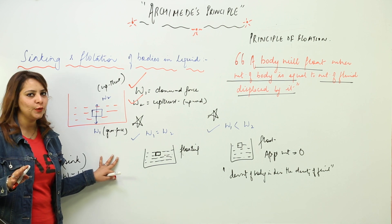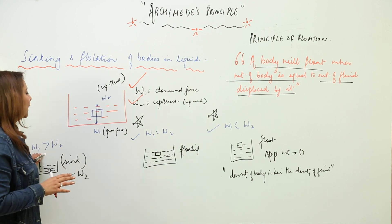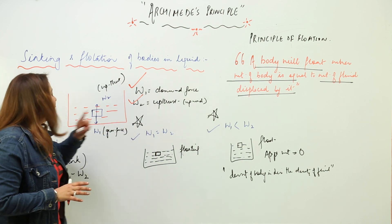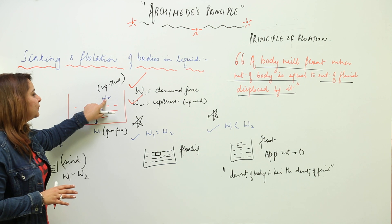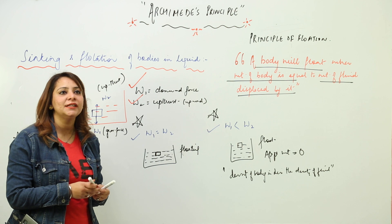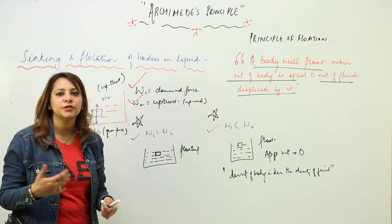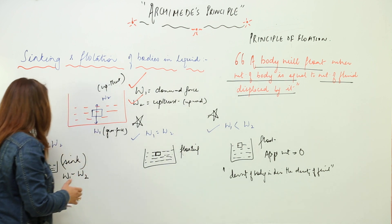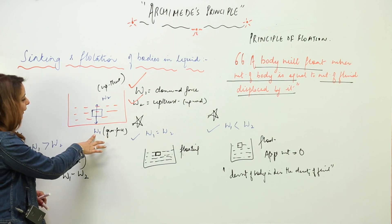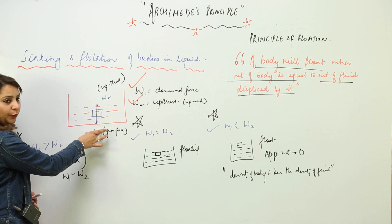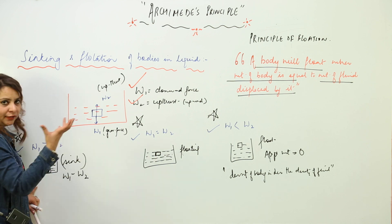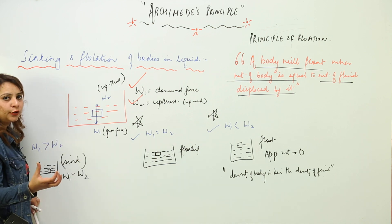We encounter many situations: there can be a possibility when W1 is bigger, a possibility when both are equal, and a possibility when W2 is bigger. These three conditions decide whether the body is going to sink or float. When W1 is more than W2, the body is going to sink, because the downward force is greater.